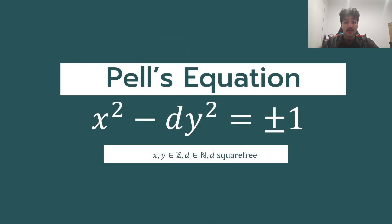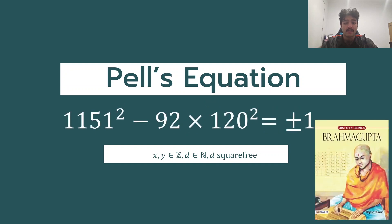Pell's equation is one of the oldest and most studied Diophantine equations, finding integer solutions x and y such that x squared minus dy squared equals to plus minus 1, where d is a square-free integer. The equation was studied prominently by early Greek mathematicians, as well as Indian mathematician Brahmagupta, who found a solution for d equals to 92. With the tools of algebraic number theory, one can show that this equation always permits infinitely many solutions, all stemming from a fundamental solution.